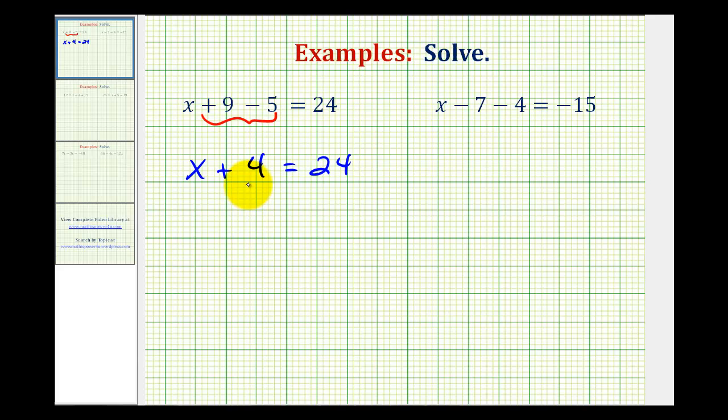And now it's just like the other one-step equations that we've solved. We want to isolate x on one side of the equation, so we want to undo this plus 4 on the left side. And the opposite of plus 4 is minus 4, so we can subtract 4 on the left side, as long as we do the same thing to the right side. So plus 4 minus 4 simplifies to 0, so we have x equals 20 as our solution.